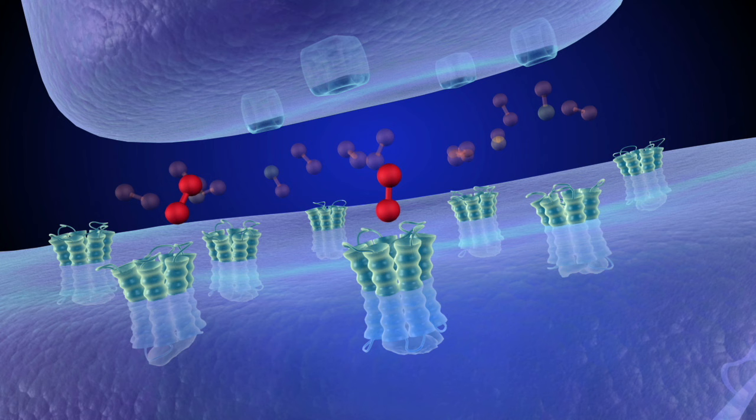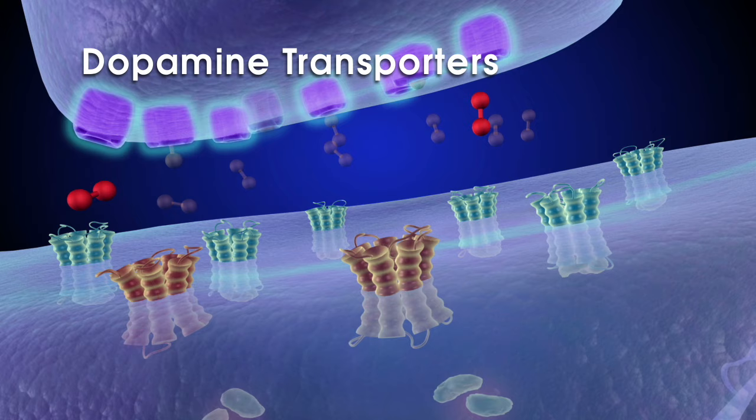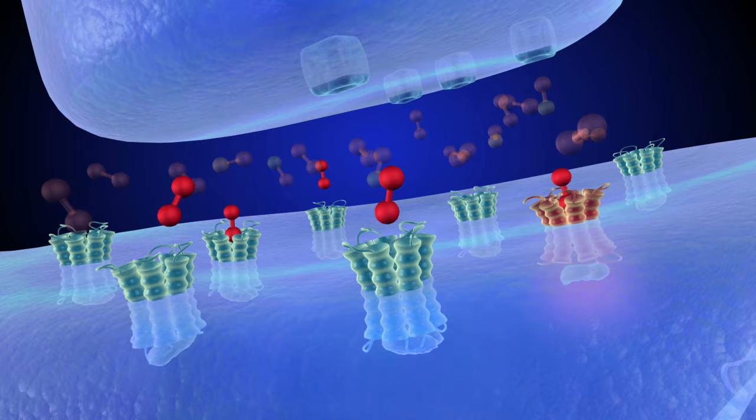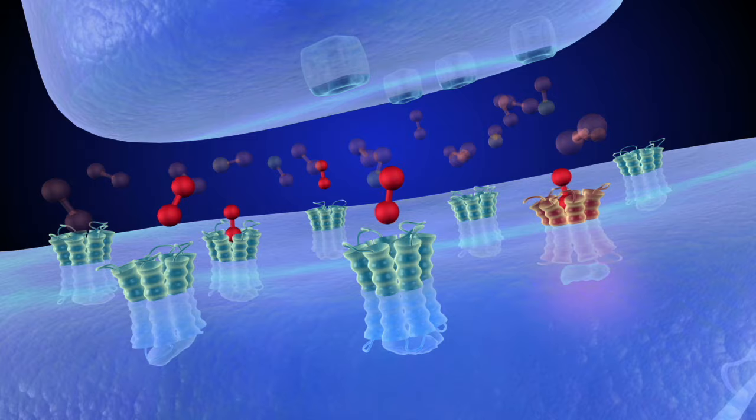Some dopamine molecules re-enter the sending cell via dopamine transporters and can be re-released. When a reward is encountered, the presynaptic cell releases a larger amount of dopamine in a sudden burst. Dopamine transporters will then quickly remove the excess dopamine.